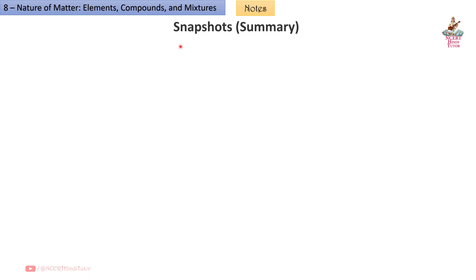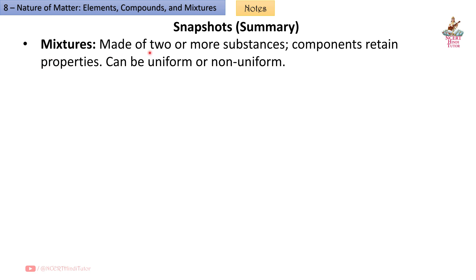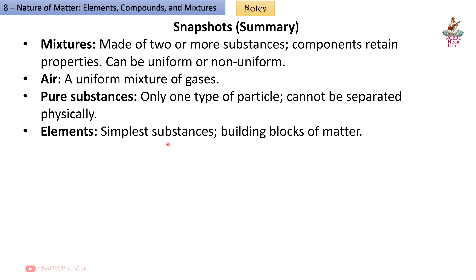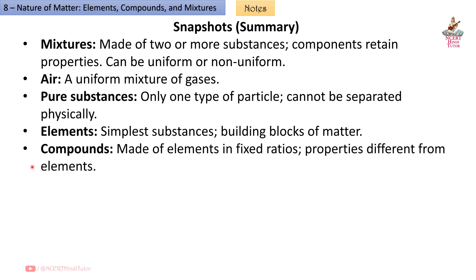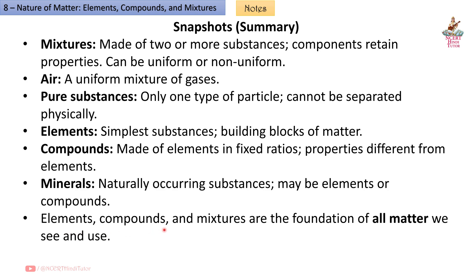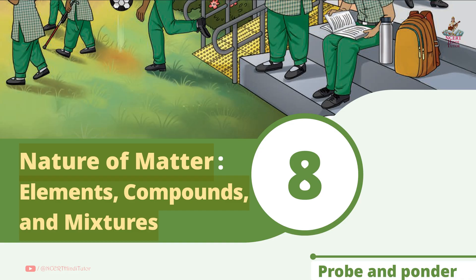Snapshots Summary: Mixtures — made of two or more substances; components retain properties; can be uniform or non-uniform. Air — a uniform mixture of gases. Pure substances — only one type of particle; cannot be separated physically. Elements — simplest substances; building blocks of matter. Compounds — made of elements in fixed ratios; properties different from elements. Minerals — naturally occurring substances; may be elements or compounds. Elements, compounds and mixtures are the foundation of all matter we see and use.